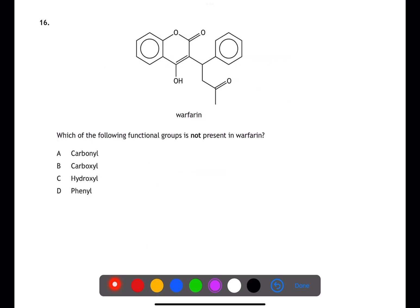Question 16 we are trying to identify the different functional groups within the molecule. We can see a carbonyl here highlighted in pink. We do not have a carboxyl group. The hydroxyl is highlighted in red and we have a phenyl group highlighted in blue. Therefore B is the answer.